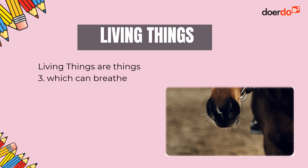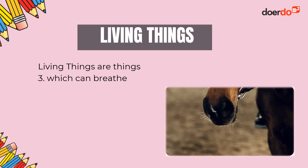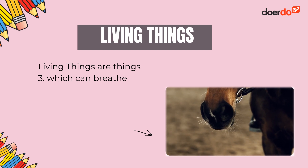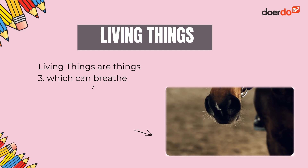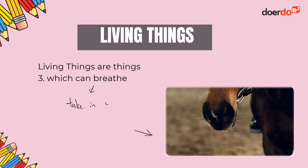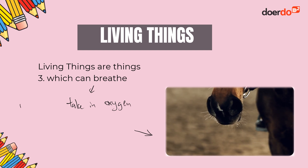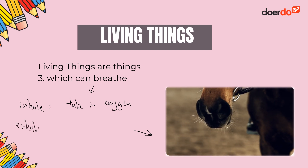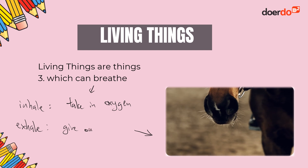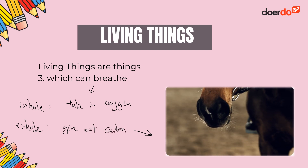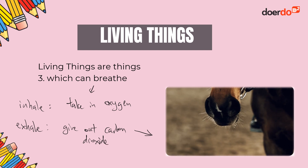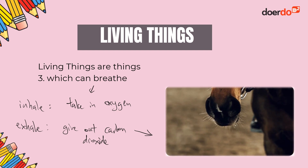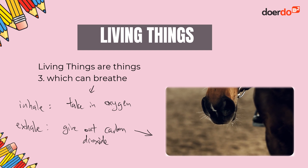Thirdly, living things are things which can breathe. You can see the horse over here breathing, with air coming out of its nose. We human beings breathe too — when we inhale, we take in oxygen, and when we exhale, we give out carbon dioxide. This process of breathing is also called respiration.